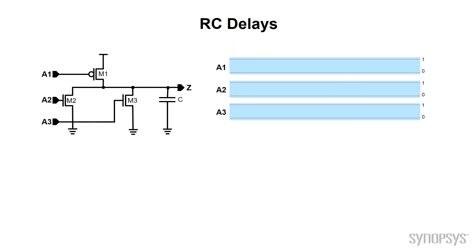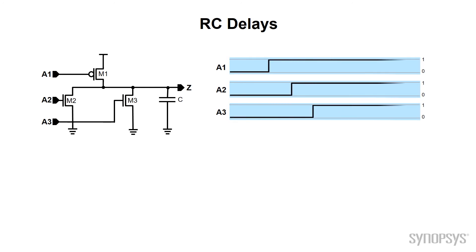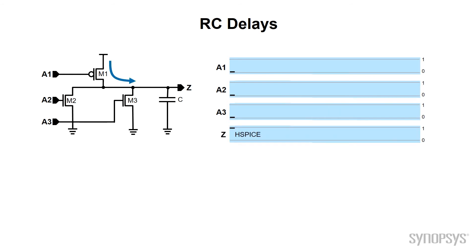We've talked about the ESP device transistor model, but how does that model actually get used? Here we're going to show you a simple network with digital waveform inputs. Looking at this circuit, initially the HSPICE simulator will tell you that Z is going to be a 1 at the beginning time, as you see in the waveforms. Then as A1 transitions to the 1 position, that will turn transistor M1 off, leaving no drivers on the net except for the charge stored in C.